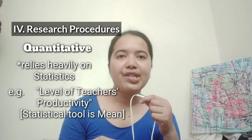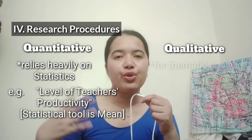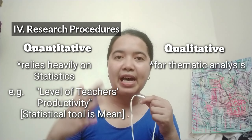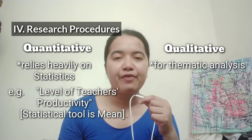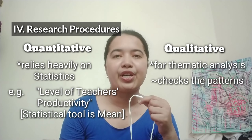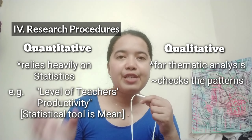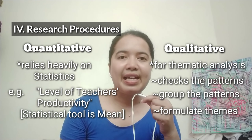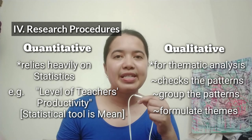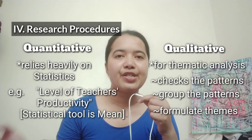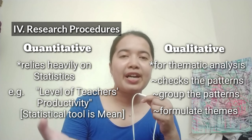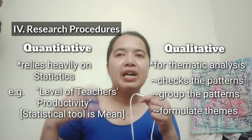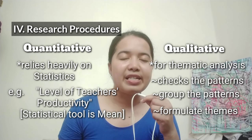For qualitative research, it's different, especially when you do thematic analysis. What you're going to do is check the pattern from the responses of your conversation partners, then cluster these patterns and formulate themes. Now, if you are doing content analysis — specifically conceptual content analysis — all you have to do is check the reoccurring pattern and count its frequency, and then form your analysis.